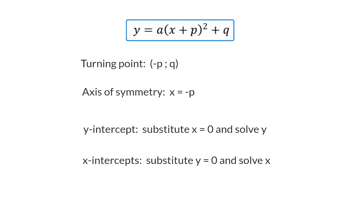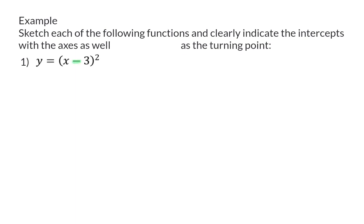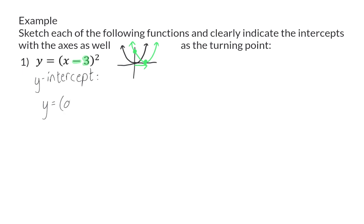Let's have a look at how to sketch a graph like this. Sketch each of the following functions and clearly indicate the intercepts with the axes as well as the turning point. In our first example, we have only one transformation, and that is the minus p. This minus 3 indicates that the graph moves 3 units to the right on the horizontal axis. This graph will have a y-intercept and an x-intercept, which will also be the turning point because the graph did not move up or down vertically. Even though we can't see the y-intercept in the equation, we can determine it by changing the x-value to 0, and the y-intercept is at the point (0, 9).